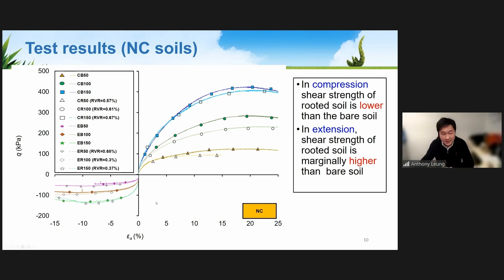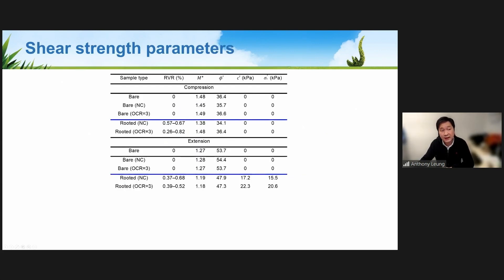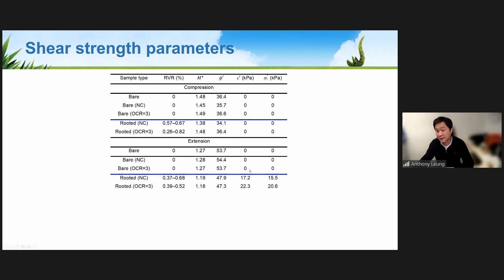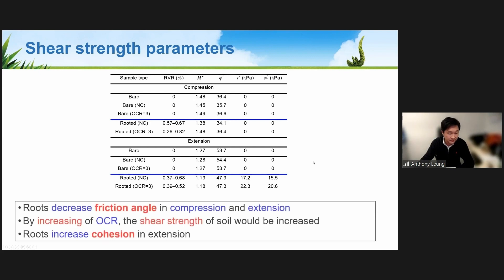Looking at the shear strength parameters — friction angle and cohesion — under compression, rooted soil has a slightly lower friction angle than bare soil, explained by the creation of soil-root interfaces. Under extension, the friction angle also decreases slightly, but cohesion increases very significantly — from zero for bare soil to approximately 22 kPa for rooted soil under the extension path. This confirms the stress path dependence of rooted soil behavior.